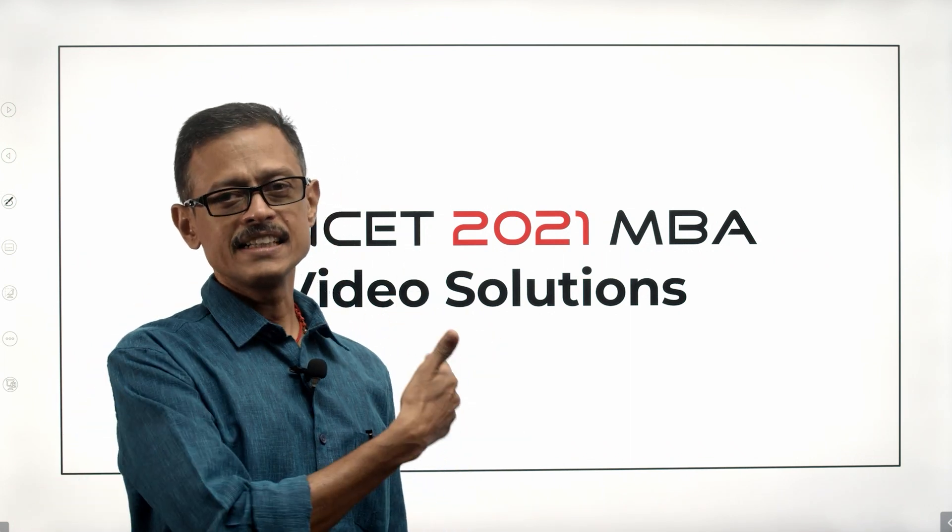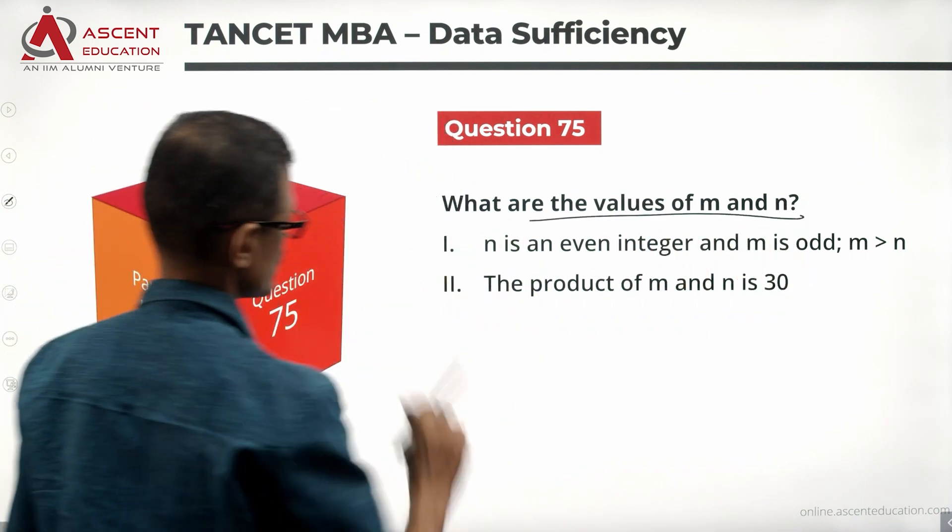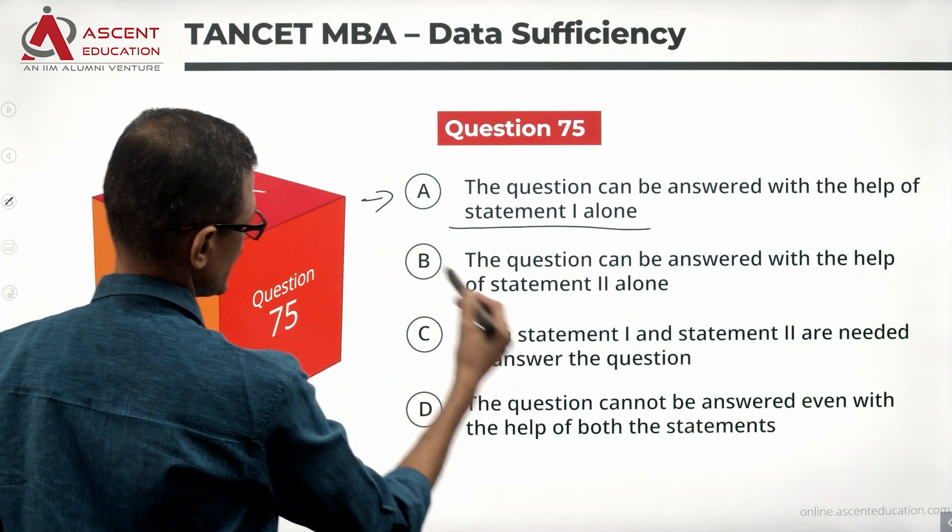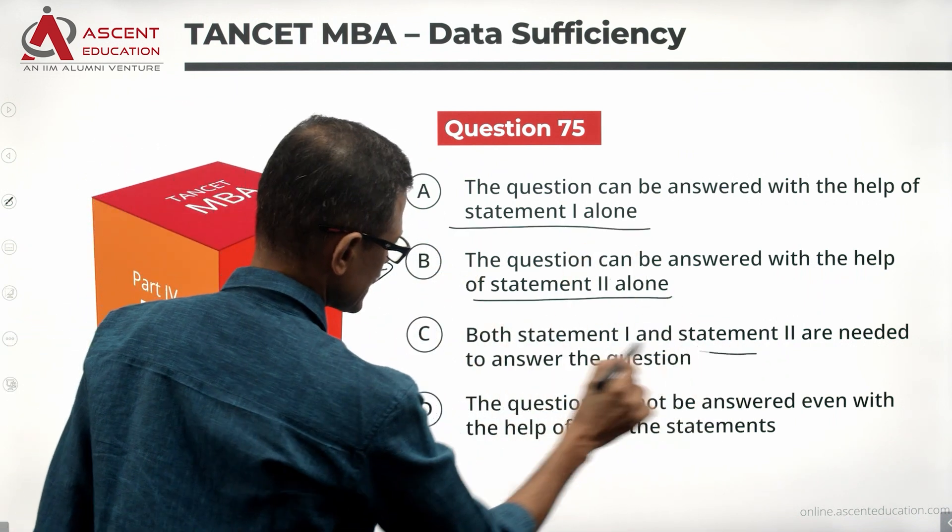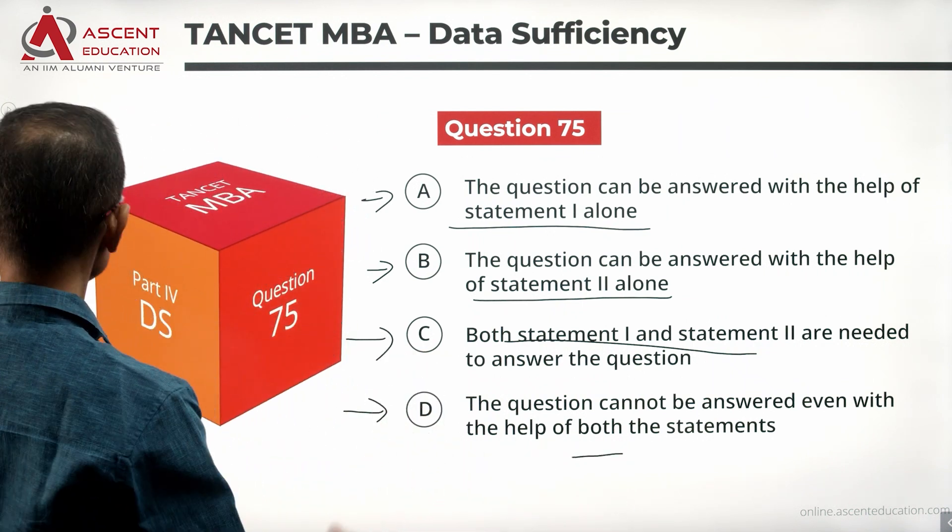Take a look at the question. What are the values of M and N is what the question is. Answer options: Statement 1 is sufficient is answer option A. Statement 2 alone is sufficient is answer option B. Together they are sufficient is answer option C. The given data is not sufficient, then the answer option is D.